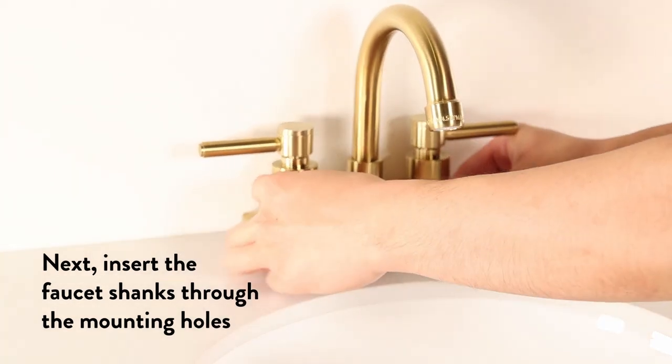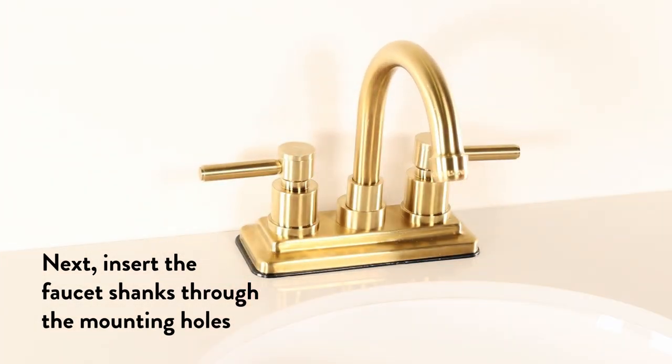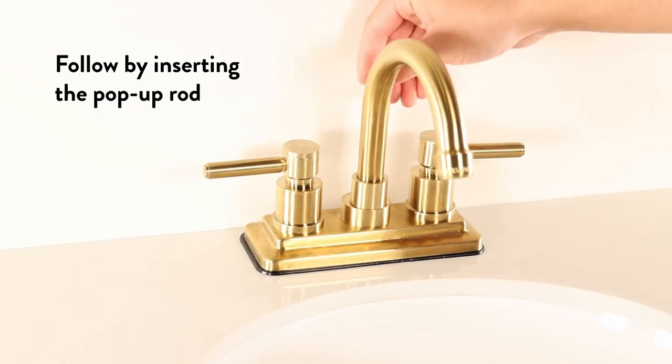Insert the faucet shanks through the mounting holes from above the sink. Follow by inserting the pop-up rod.